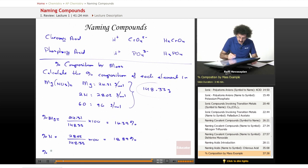And then the percent oxygen, you can either calculate it or you can just add these two and subtract from 100. And we're going to get the same answer. 96 divided by 148.33 times 100. And you end up with 64.72%.